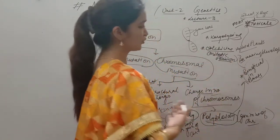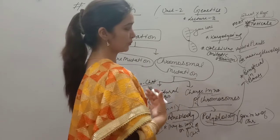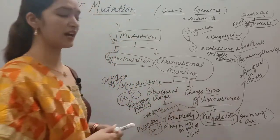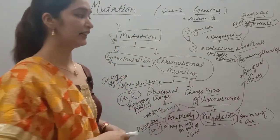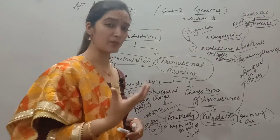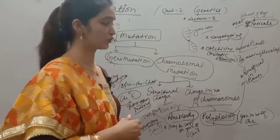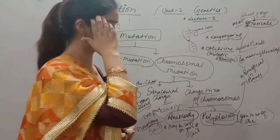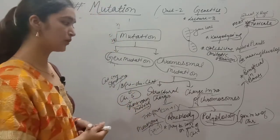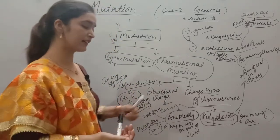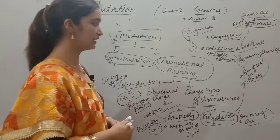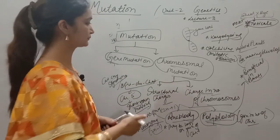Changes in chromosome number may be due to problems in segregation or separation of chromosomes at the time of meiosis. In animals or humans, polyploidy leads to disease conditions.